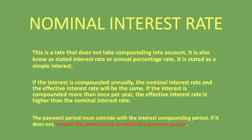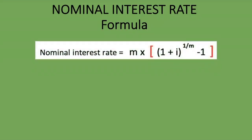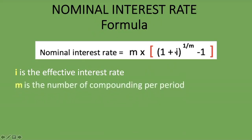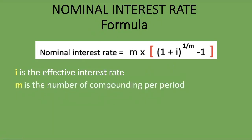So what is the formula for the nominal interest rate? Here it is: the formula is m times the sum of (1 plus i) to the power of 1 divided by m, minus 1. The i is the effective interest rate, and m is the number of compounding periods per year. It's a very simple formula for the nominal interest rate.